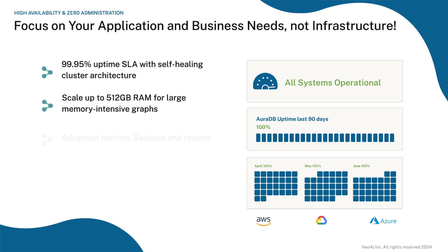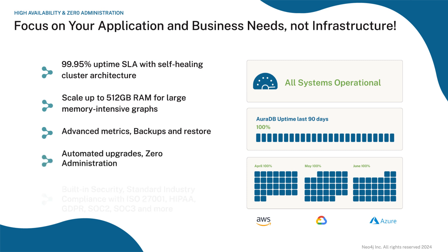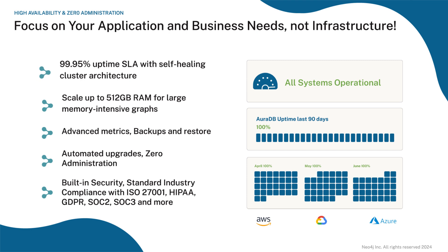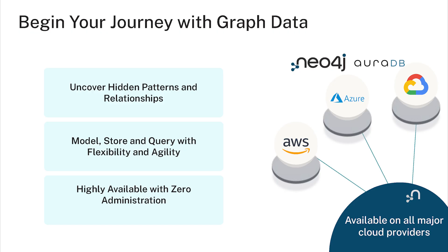You can run your applications on a fully managed graph database that is highly available, featuring multi-node cluster architecture, built-in enterprise security controls, and a guaranteed 99.95% uptime SLA. You can deploy on any cloud provider of your choice. Start your graph journey with Aura for free — thanks for listening.